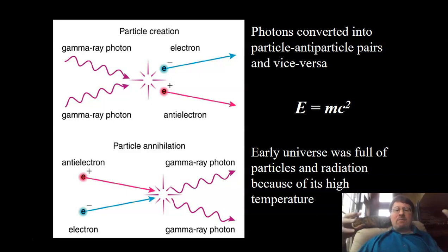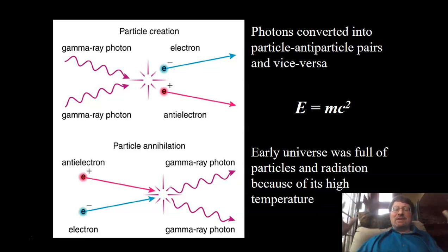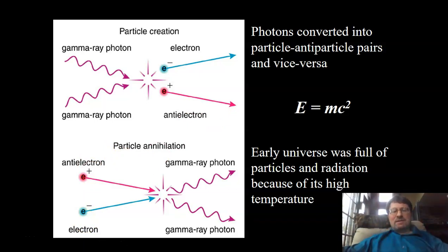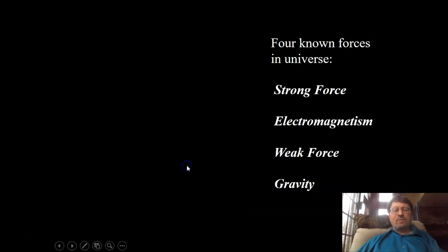When it's hot enough back in the past, you have these kinds of interactions occurring all the time. Energy is matter, and matter is a form of energy — E = mc² gives us the relation between the two. When something is very hot, you can have photons collide and from those massless particles of light get massive particles like an electron and an anti-electron, or it can go the other way where an electron and anti-electron annihilate and release gamma ray photons. These kinds of reactions occur continually in the early universe.